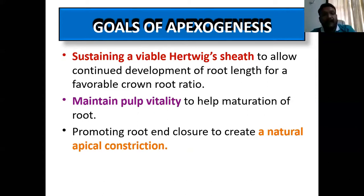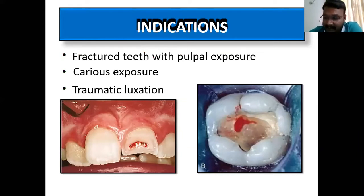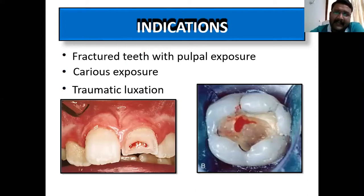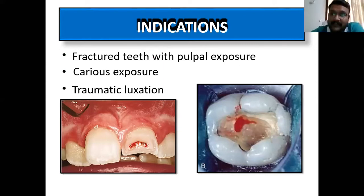Coming to the indications: the first is fracture — the fracture has occurred, the patient comes to you, you take an X-ray and see the apex is open; that is the first case for apexogenesis. The second is carious exposure — carious exposure which is not an irreversible condition; if there is an abscess or a fistula you cannot go for apexogenesis. The next indication is traumatic luxations.